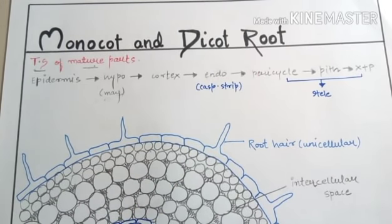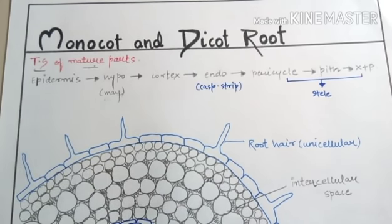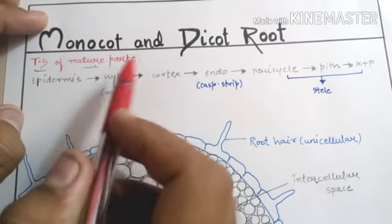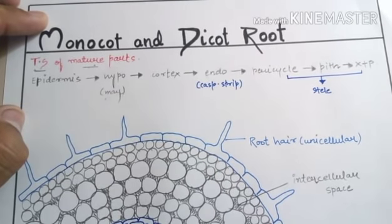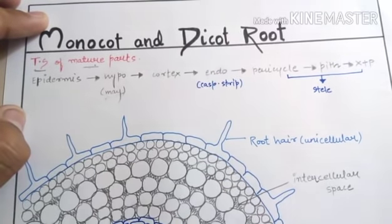After that, one important topic is secondary growth, which is an important property of dicot plants — they show secondary growth, whereas in monocots it is absent. So monocot and dicot have many differences on the basis of their root, stem, and leaves. Today we are going to talk about roots.